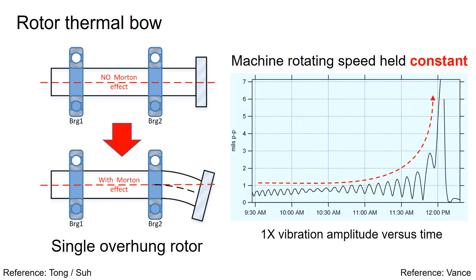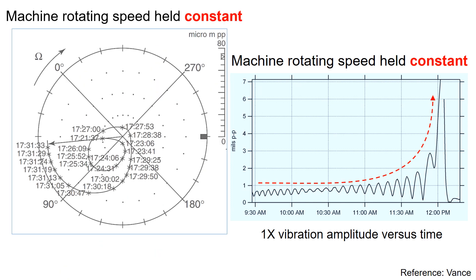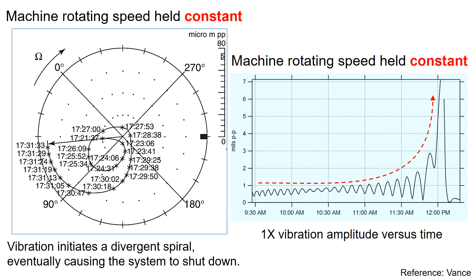Going back to the 1x vibration versus time plot here on the right, the Morton Effect can cause substantial increase in the 1x vibration amplitude due to thermal bowing while the machine rotating speed is held constant. Here's another graph illustrating how the Morton Effect results in a divergent spiral vibration.